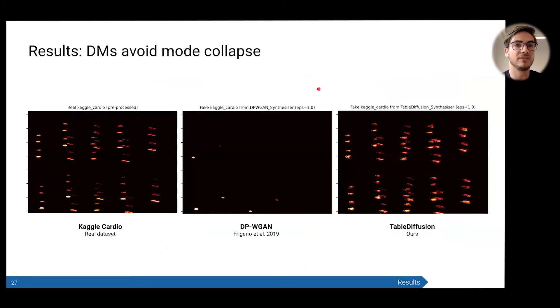Another key thing is that the diffusion models avoid mode collapse. Here is one of our datasets projected down to two dimensions with PCA. We put in like a heat map. You can see that the WGAN just mode collapses to kingdom come, and it just finds these few clusters that it likes, and it overfits on them. Whereas table diffusion does a really good job of recreating and representing all of those different modes.